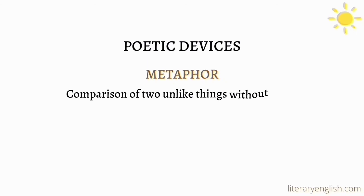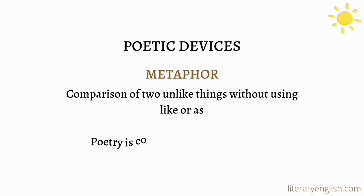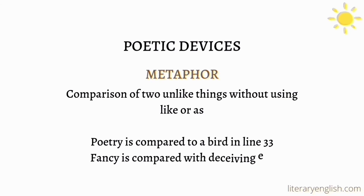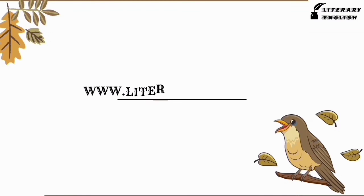The next poetic device is metaphor. Metaphor is the comparison of two unlike things without using 'like' or 'as.' Poetry is compared to a bird in line 33 of the poem, and fancy is compared with a deceiving elf. That was a brief analysis of 'Ode to a Nightingale.' The written analysis of this poem is also available on our website and you are more than welcome over there. See ya!